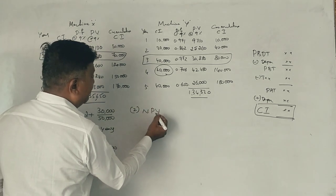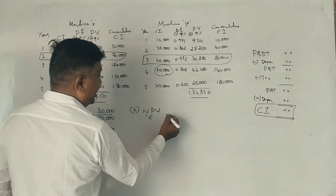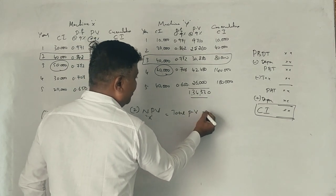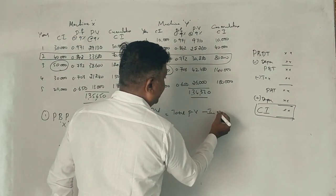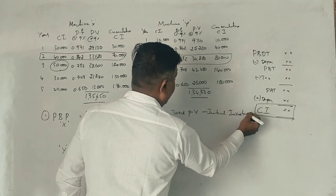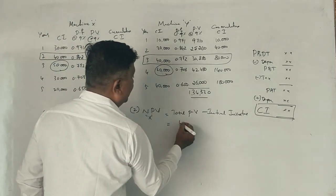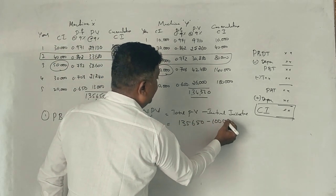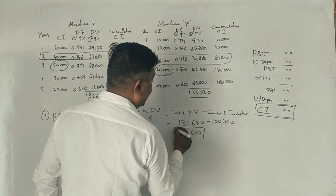This is the net present value. Net present value of machine X. Formula is: total present value minus initial investment. What is the total present value of machine X? 1,35,650. Initial investment is 1,00,000. Net present value is 35,650.